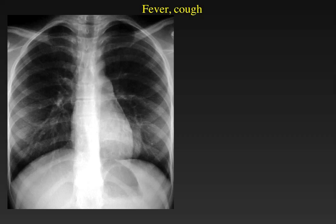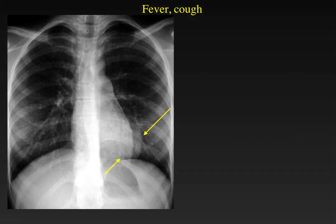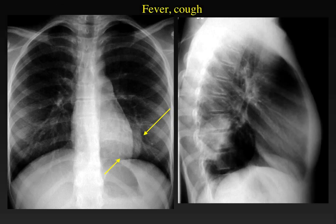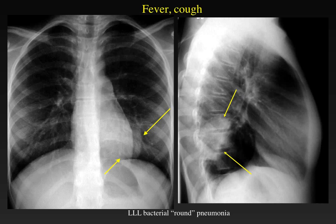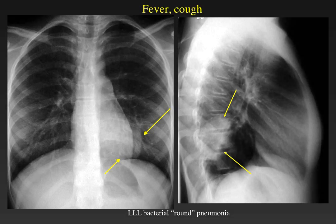When we see a focal parenchymal change in density, we have to consider the possibility of pneumonia, as in this child where there is a dense, well-defined, rounded mass in the retrocardiac region. On the lateral view, we can see that this mass is overlying the spine. This is a round pneumonia, which is a classic sign for bacterial pneumonia in children. Pneumonias tend to be well-defined and rounded much more commonly in children than in adults, and they may be misinterpreted as a pulmonary mass.